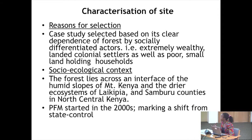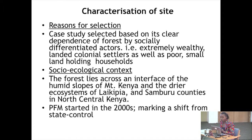The site was selected because of its clear dependence on the forest by socially differentiated actors — extremely wealthy and landed colonial settlers as well as poor smallholder farmers. The forest is located on an interface of the humid slopes of Mount Kenya and Samburu ecosystems towards the north. PFM as an intervention started in the year 2000, making a shift from state control of forest to involvement of local communities.